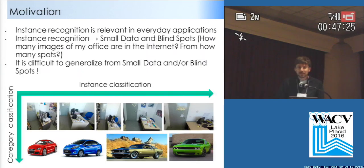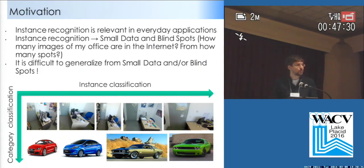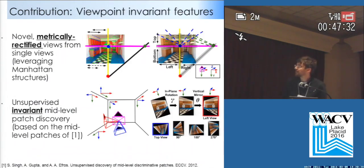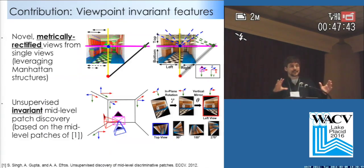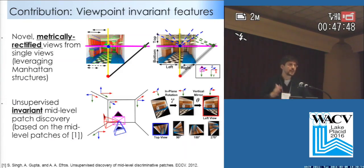So the aim of our research is to propose more involved models to be able to deal with these situations. Specifically in this paper, our intention is to leverage the Manhattan structure of some scenes — for example, this room — to generate synthetic views of the scene that are more or less normalized, and we extract features and classify based on these normalized views.